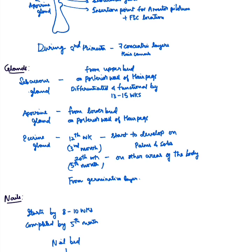Apocrine glands develop from the lower bud on the posterior surface of the hair peg in the regions of the axilla and groin, and they become functional by puberty. Eccrine glands start to develop at the third month — 12th week — and first begin on the palms and soles; by the fifth month they are seen all over the body, arising from the germinative layer. The lumen forms between the fourth to eighth month; by the eighth month the lumen broadens; by the ninth month myoepithelial cells become recognizable; by 36 weeks sweating to emotional stimuli starts; and full term maturity of eccrine glands is achieved postnatally.